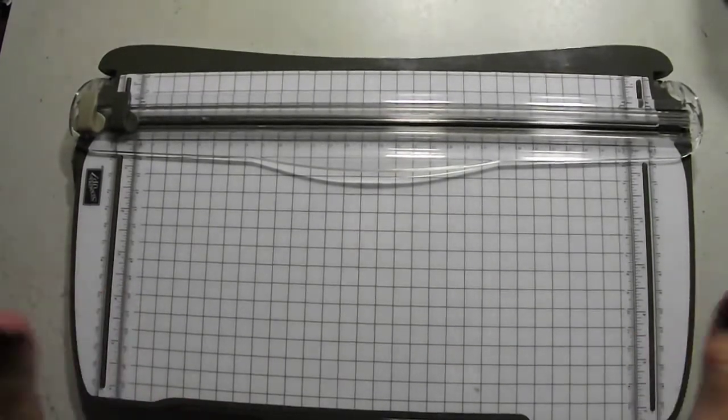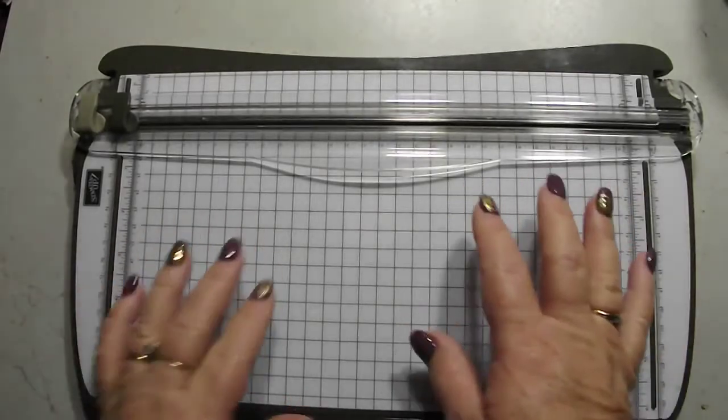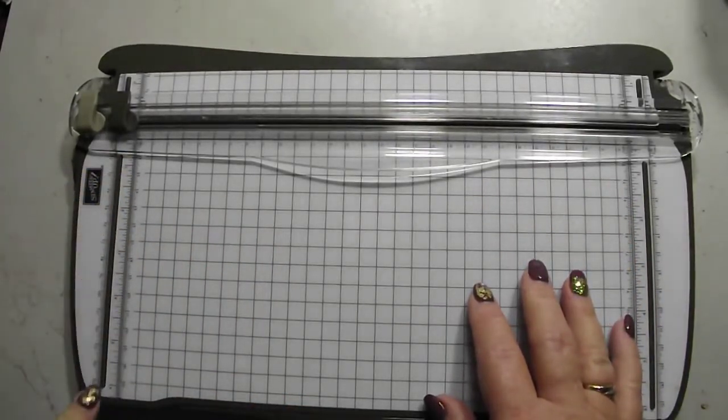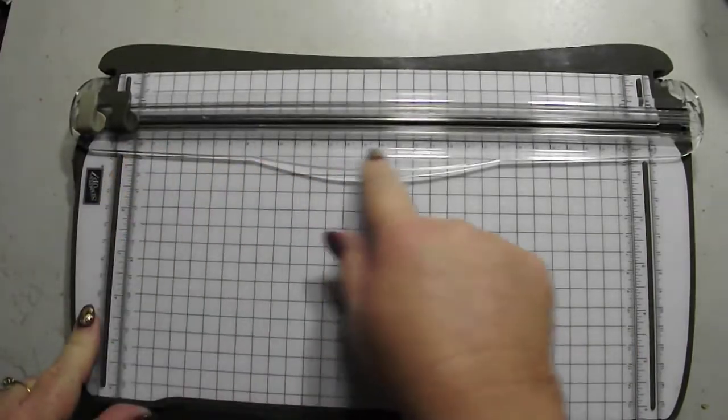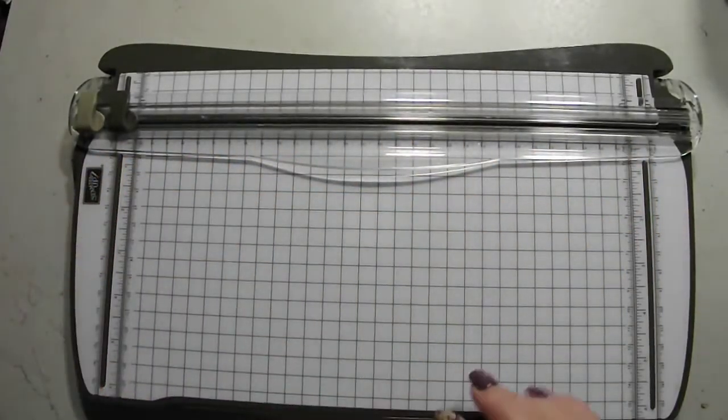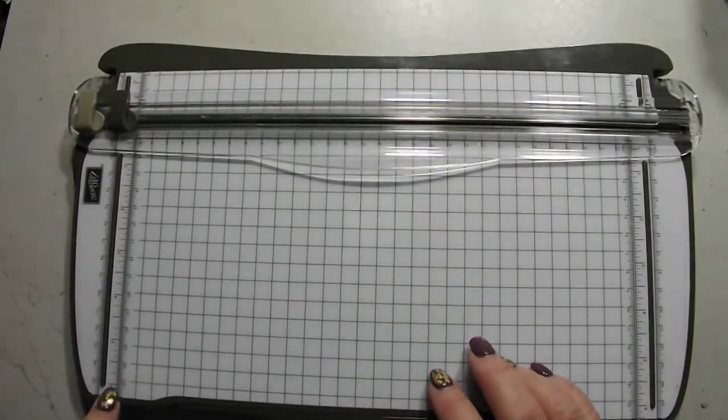One of the tricks is, this is your Stampin' Up Trimmer. It comes in inch measurements and we also have metric measurements. Down this side we only have metric measurements, but it goes right through to 6 inches.